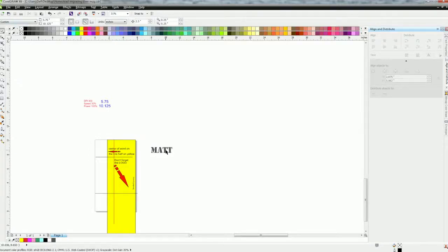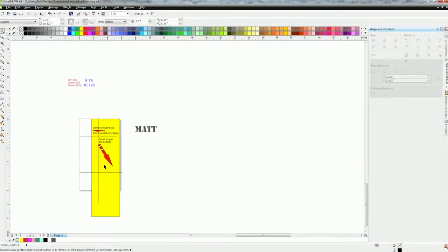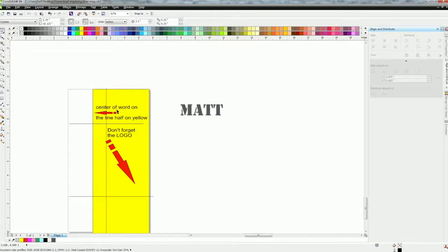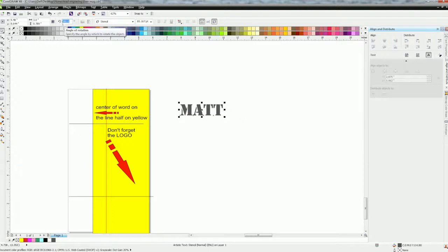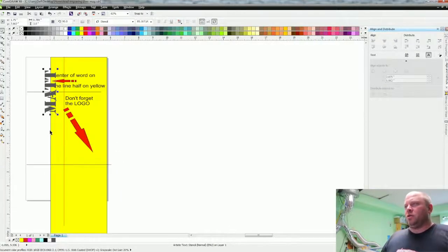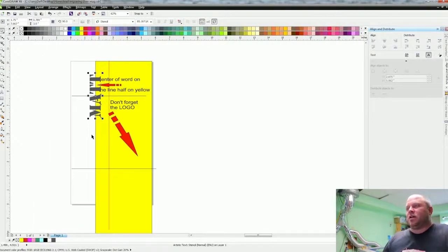Okay so then over here I picked this font stencil fonts and I just type my name Matt. So what I like to do here is I like to make a rectangle and I make it yellow. Okay so I do this so I can see my notes I have here and then you have a line that you're going to put the font on.